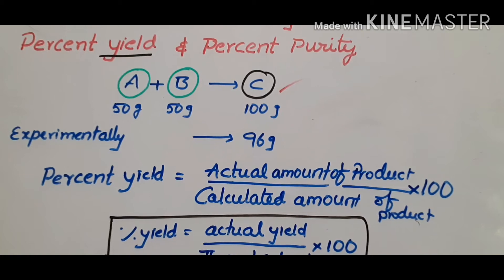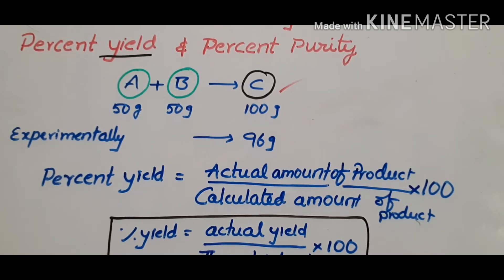Students, today's topic is percent yield and percent purity. In the real world of chemistry, things will not happen exactly as we planned on paper.